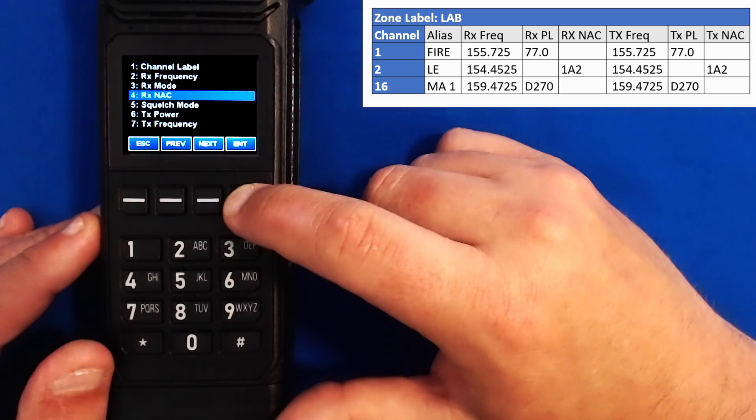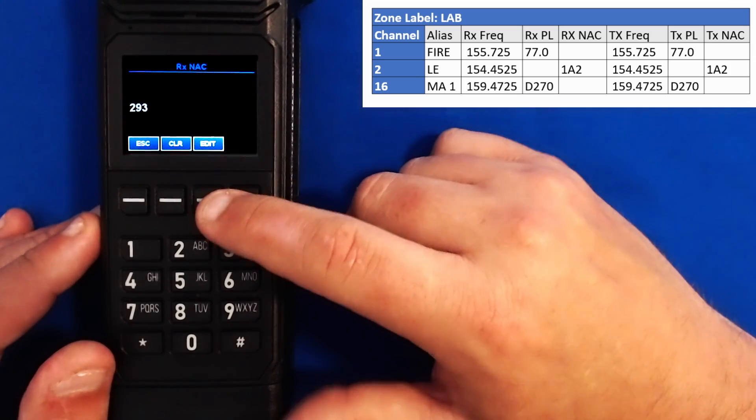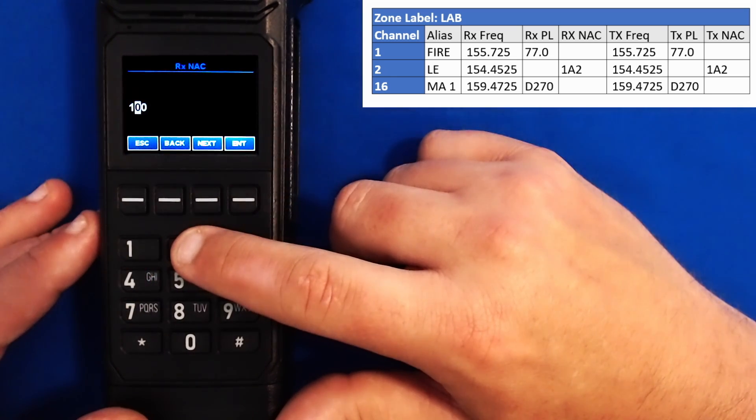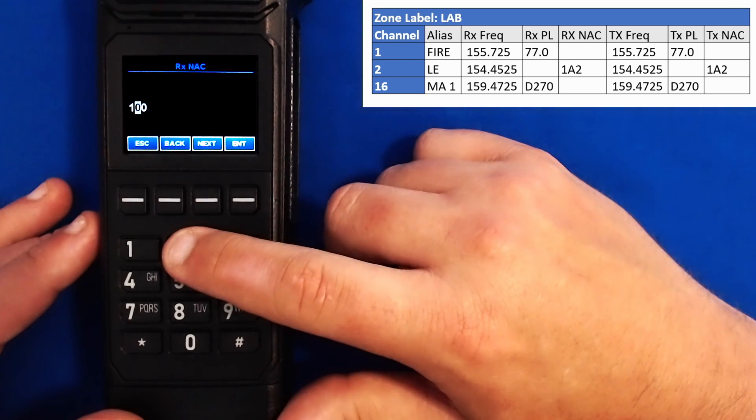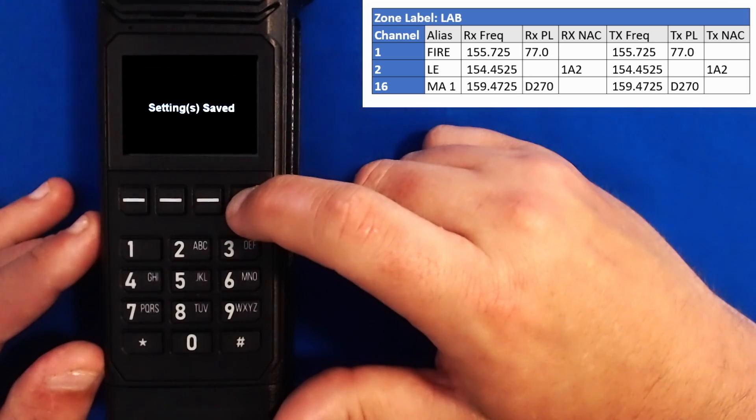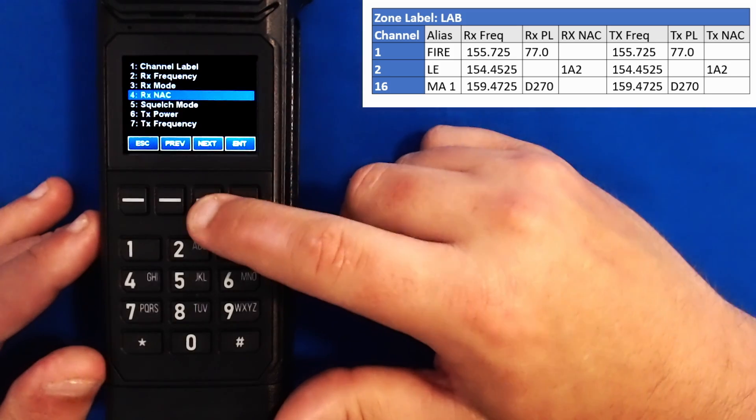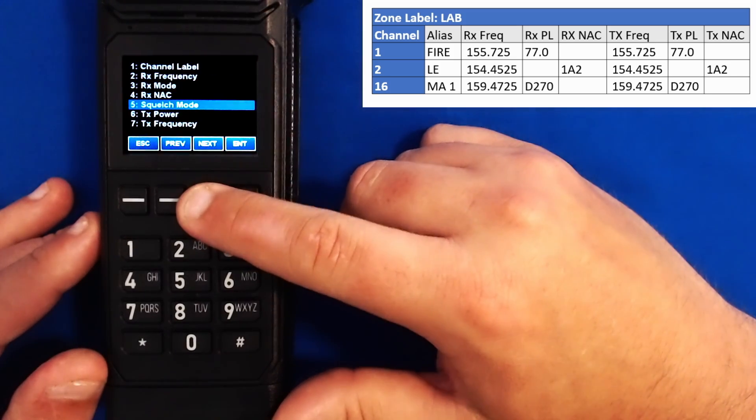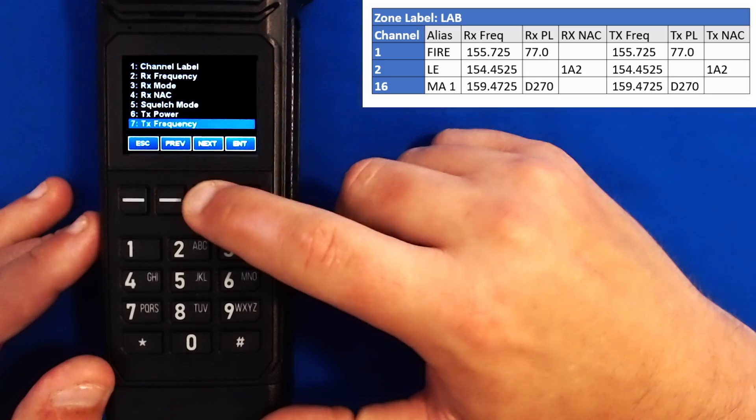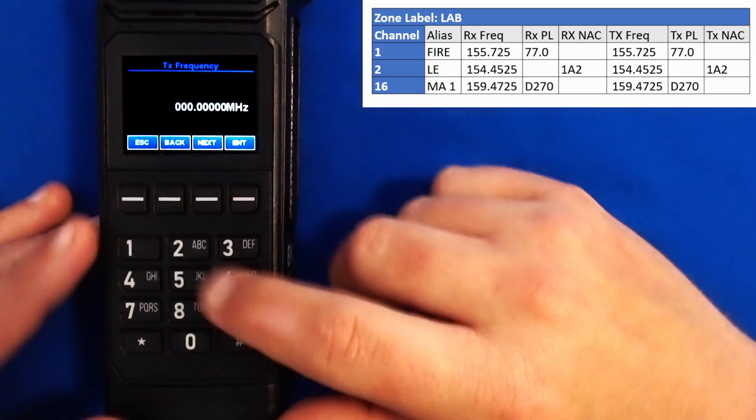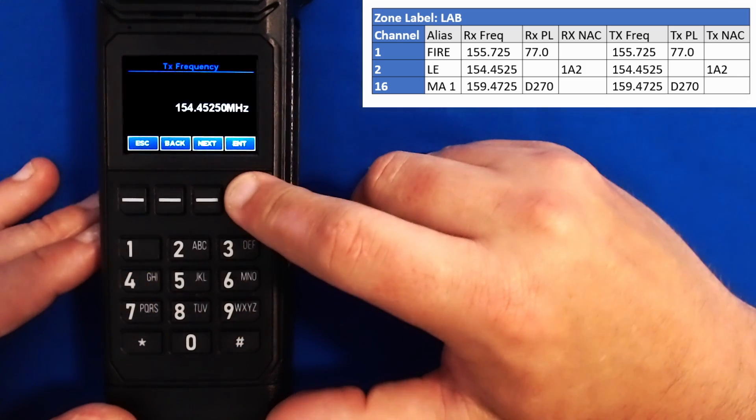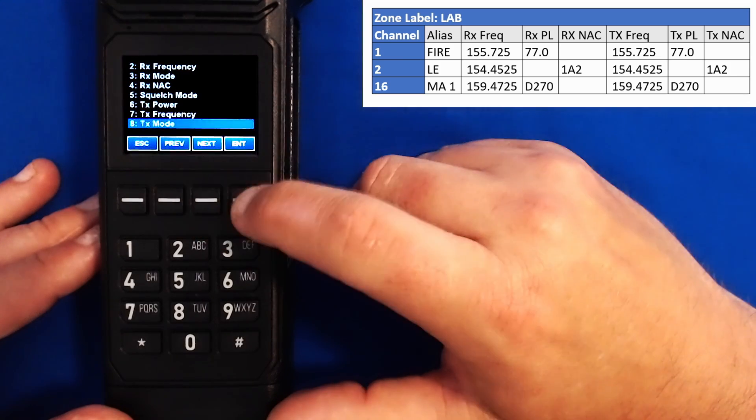Next, we'll go down to our NAC code. Select enter and clear. You'll notice the NAC is a hexadecimal number, meaning that it has alphanumeric numbers. Enter A, hit next, 2, enter. Squelch mode is normal, it's fine. Transmit power, high is good. Transmit frequency, we'll hit clear. We'll type in 154425.